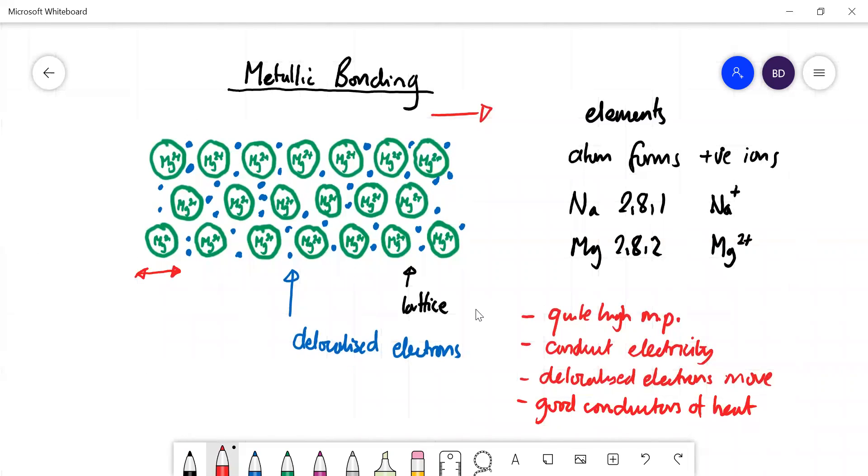The reason why they're conductors is down to the delocalized electrons. The delocalized electrons can move throughout the structure, so they can move from one end of a piece of metal to another and transfer heat energy. They pick up heat energy at one end and transfer it down to the other end of the metal.